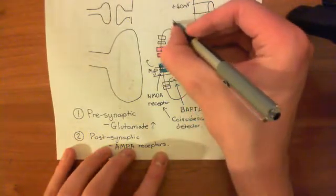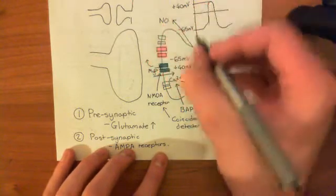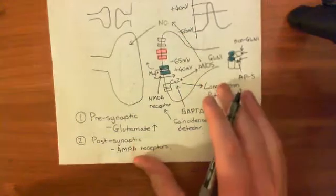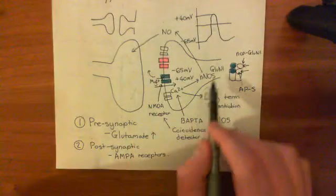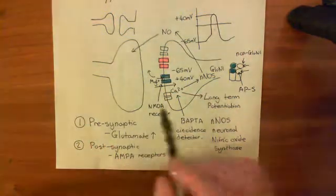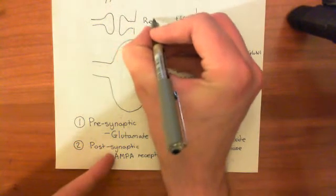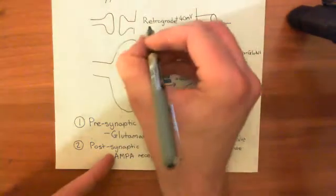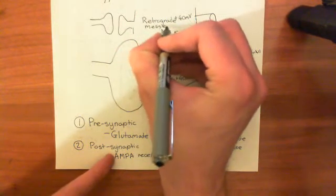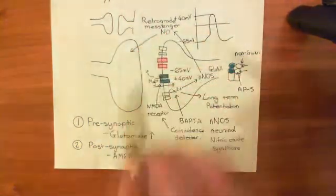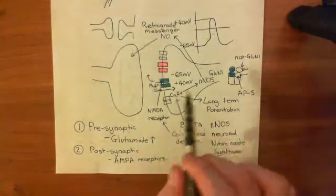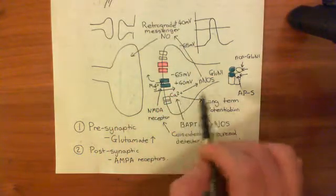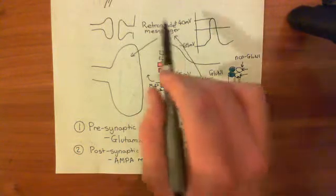Nitric oxide is an incredibly soluble molecule, so basically it will diffuse straight out of the cell, out of the dendritic spine, and it will diffuse back to the axon terminal. That was the big thing that people couldn't understand — how could a rise in calcium here cause a change presynaptically? You would need something known as a retrograde messenger, some molecule that was going to be sent back from the postsynaptic cell to the presynaptic cell. Nitric oxide has been suggested to be this retrograde messenger. As I say, it's not been proved, but it's a suggested theory — this might be completely wrong.